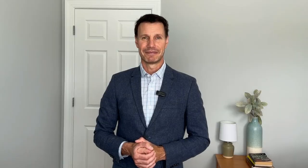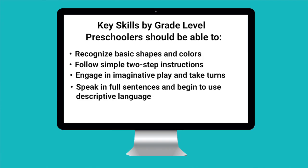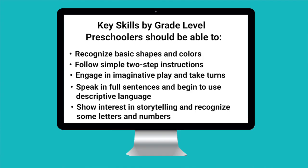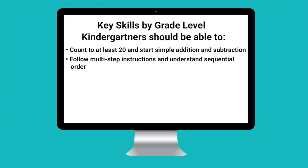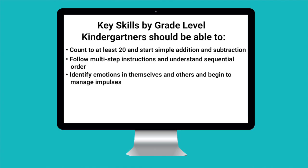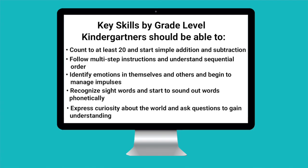Here's a sample list to get you started — key skills by grade level. Preschoolers should be able to recognize basic shapes and colors, follow simple two-step instructions, engage in imaginative play and take turns, speak in full sentences and begin to use descriptive language, show interest in storytelling, and recognize some letters and numbers. Kindergarteners should be able to count to at least 20 and start simple addition and subtraction, follow multi-step instructions and understand sequential order, identify emotions in themselves and others and begin to manage impulses, recognize sight words and start to sound out words phonetically, and express curiosity about the world and ask questions to gain understanding.